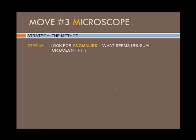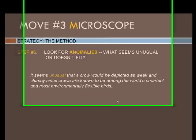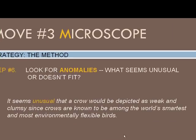Finally, look for anomalies in your subject — things that do not seem to fit. It's useful to leave this step until the end because it can often help us see something we overlooked before, or it can help disrupt any snap judgments or generalizations we may have begun formulating. Write a sentence explaining each anomaly that you find. Here's an example: it seems unusual that a crow would be depicted as weak and clumsy, since crows are known to be among the world's smartest and most environmentally flexible birds.